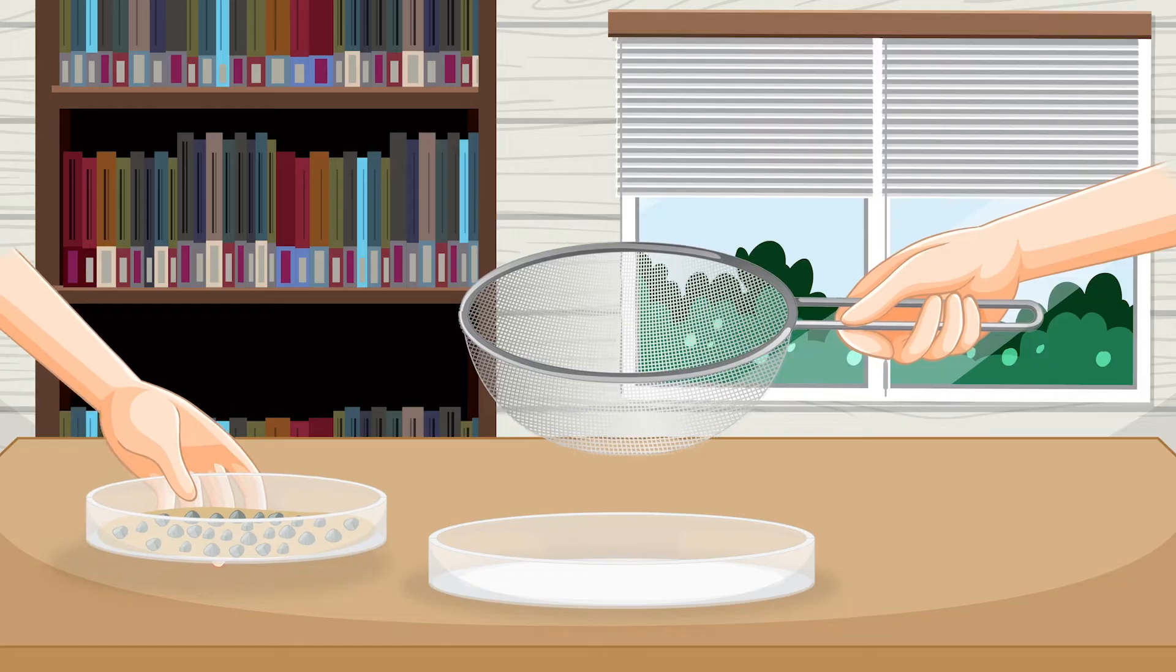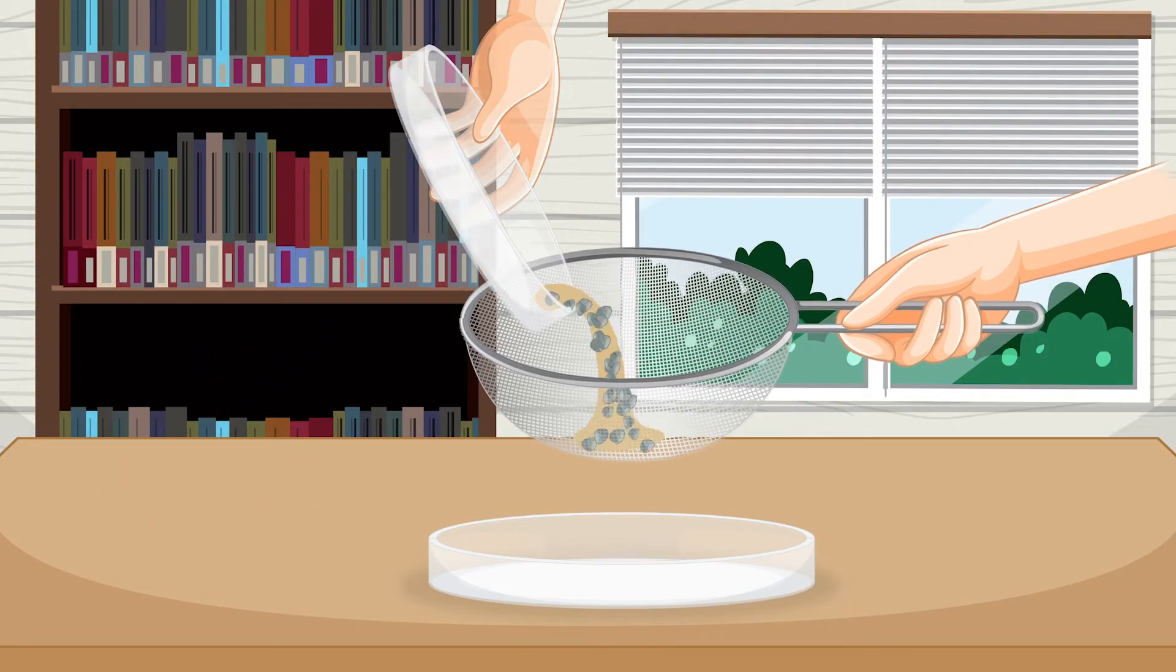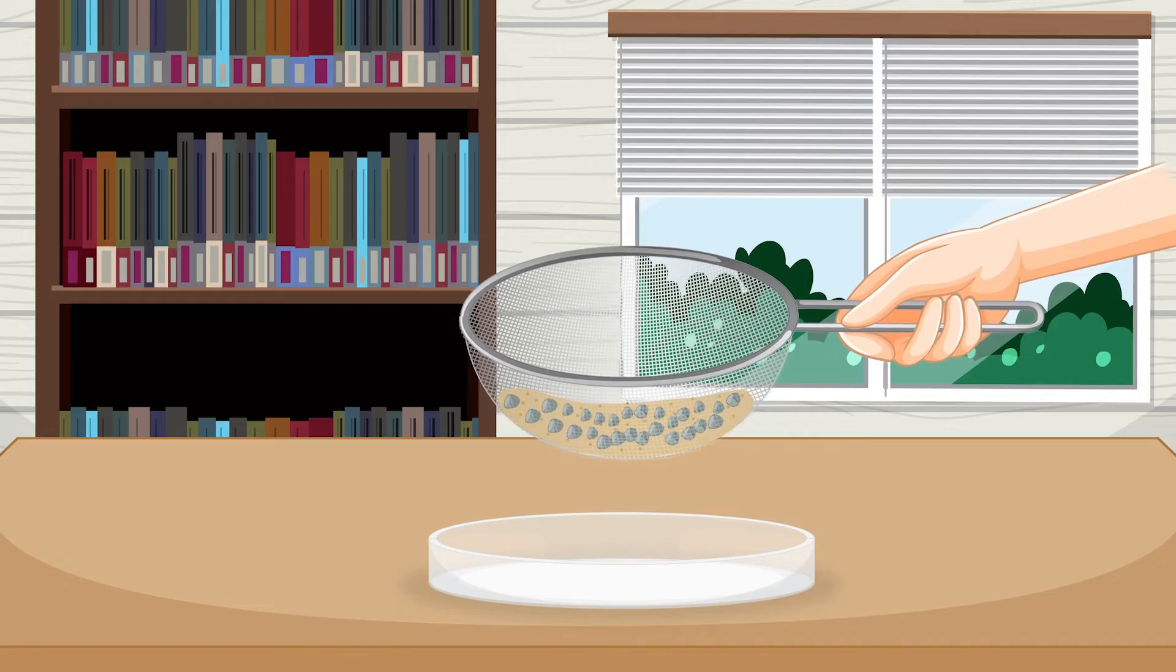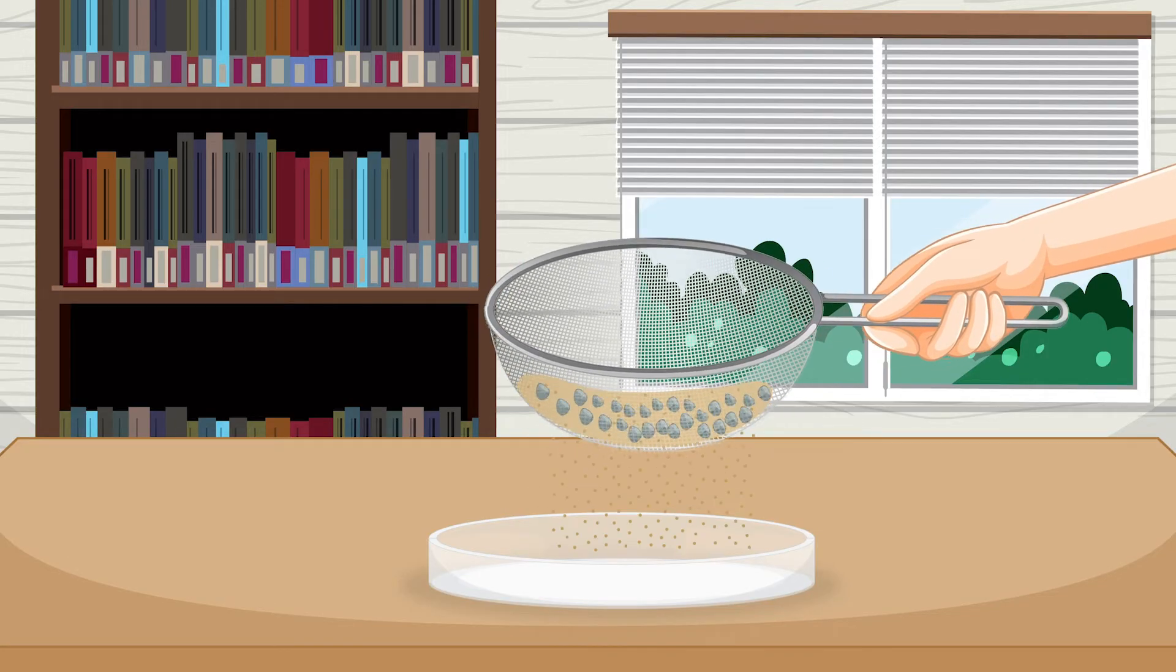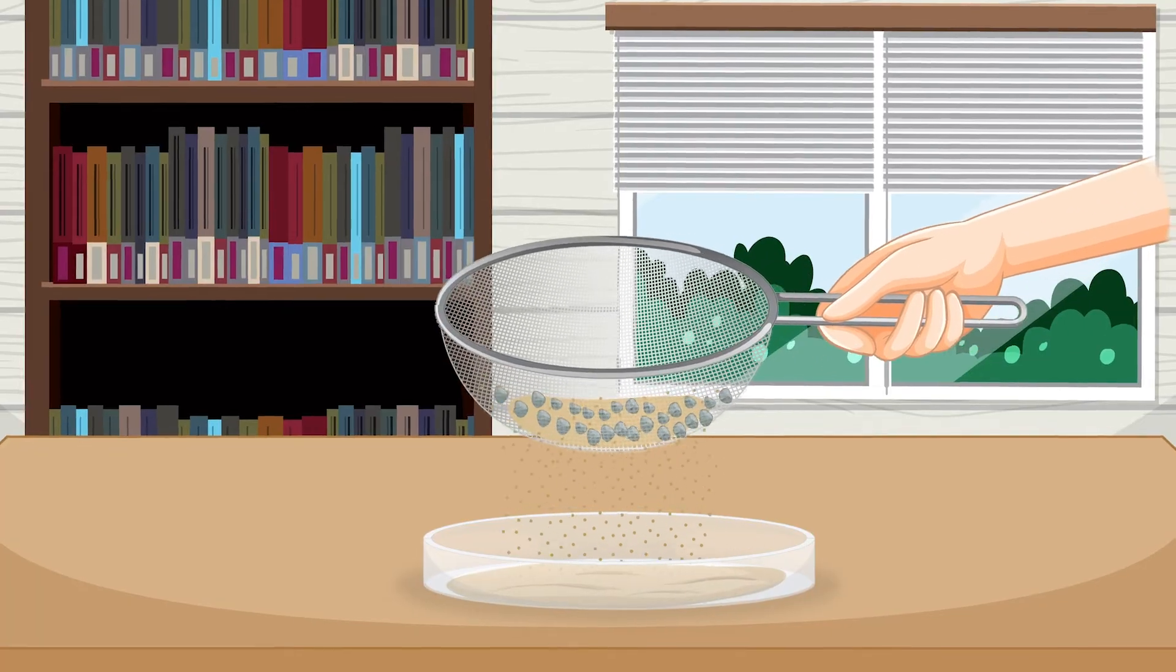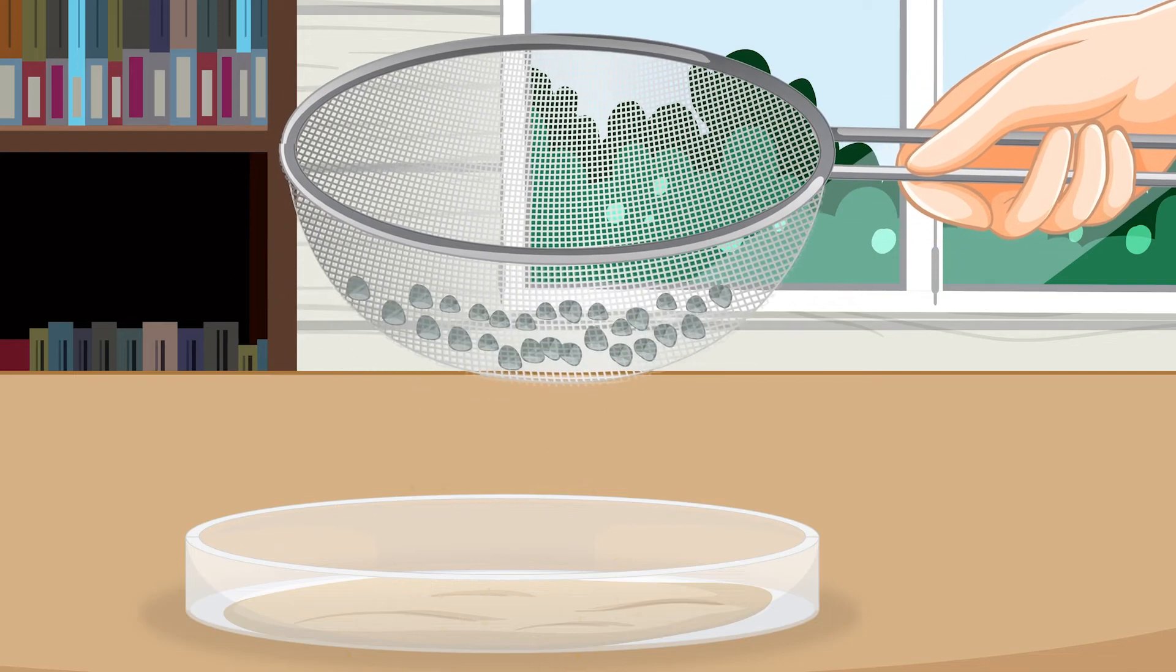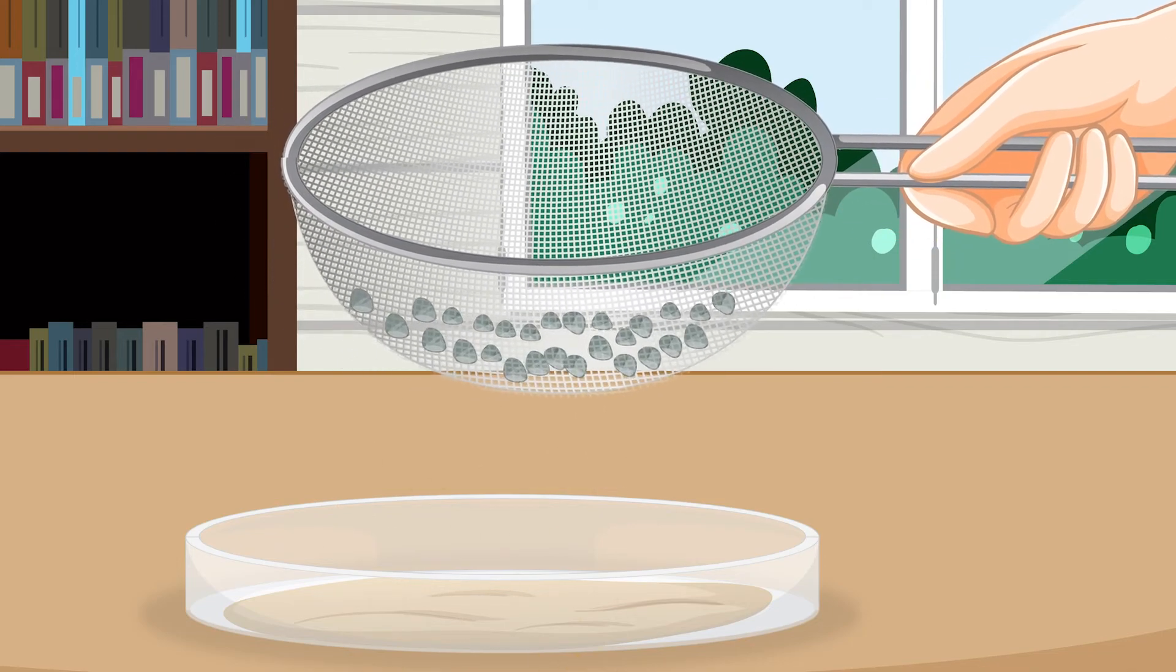Let's see this in action. We'll use the sieve to separate our mixture of sand and gravel. The mixture is poured into the sieve and the sieve is gently shaken from side to side. As the sieve is agitated, the sand grains fall through the holes in the mesh, while the larger gravel pieces remain on top of the sieve.